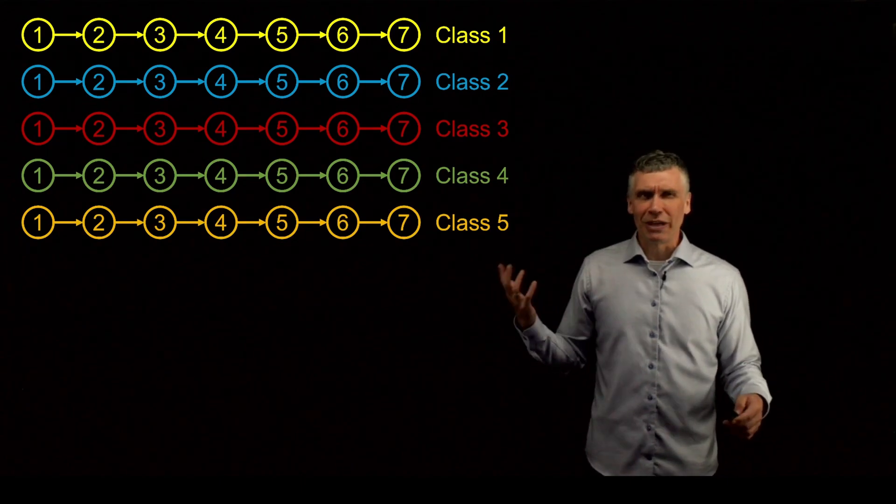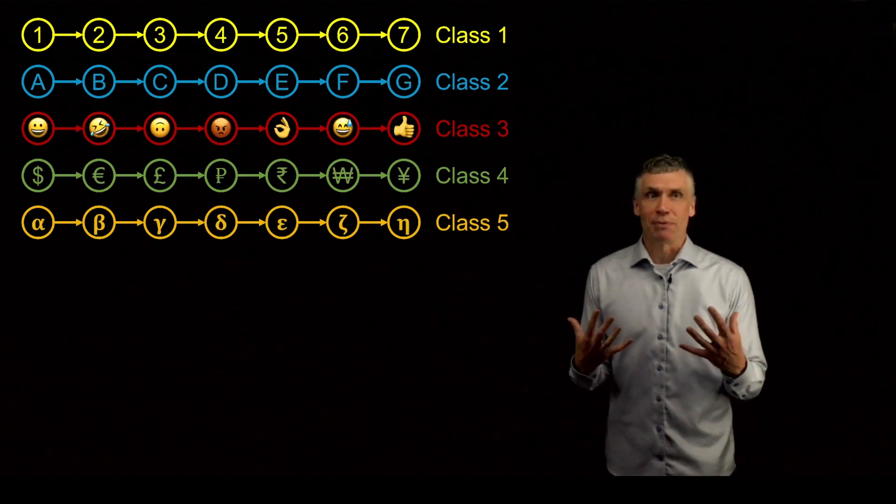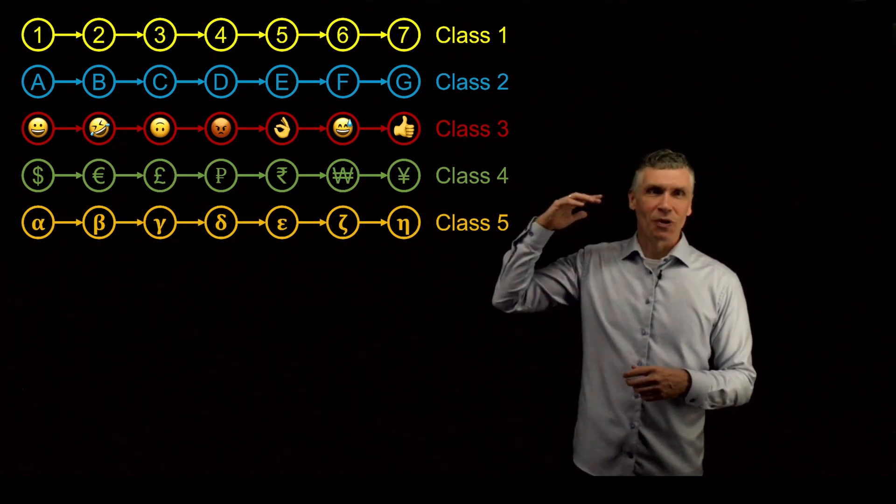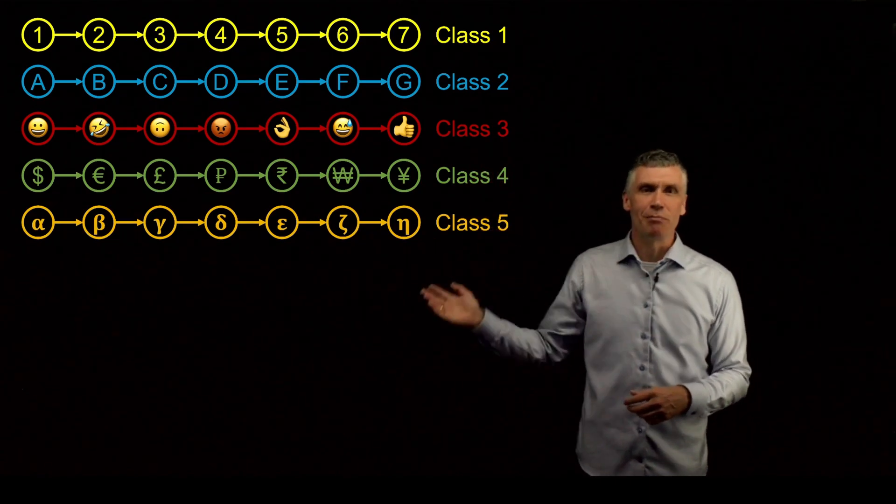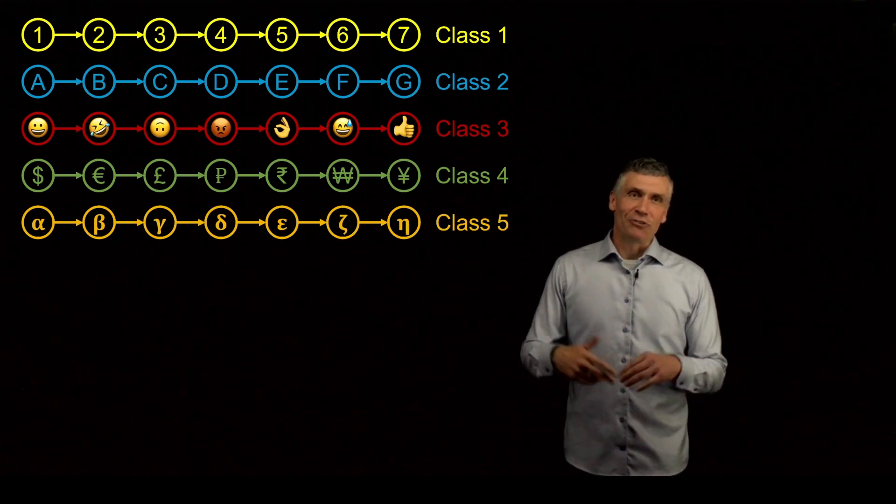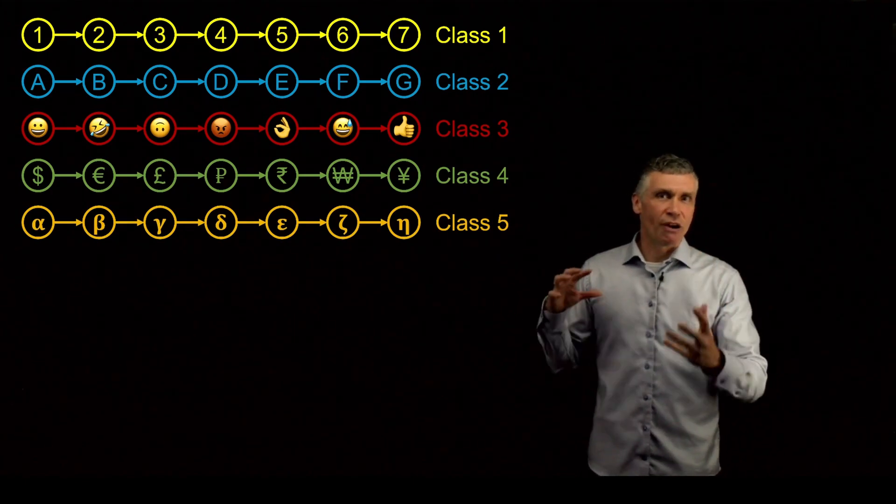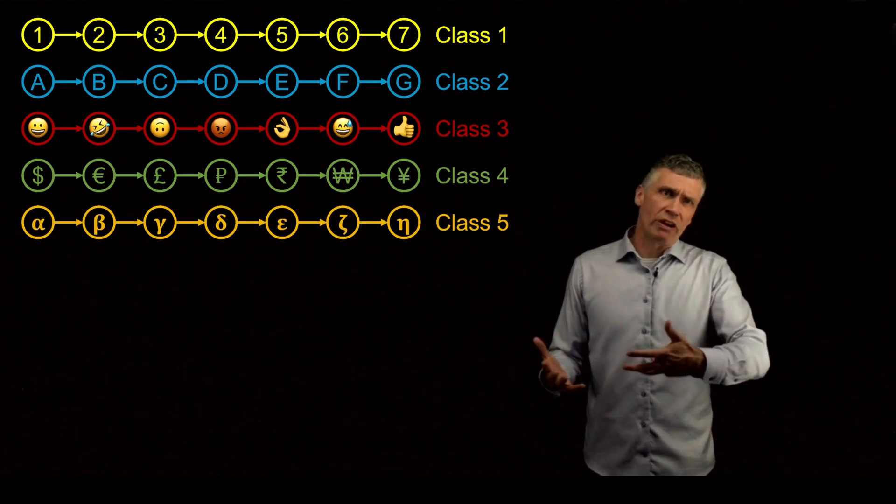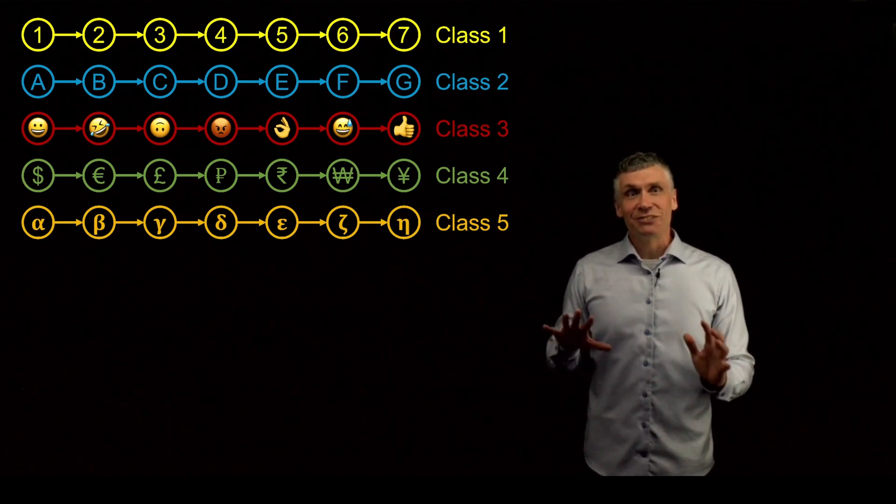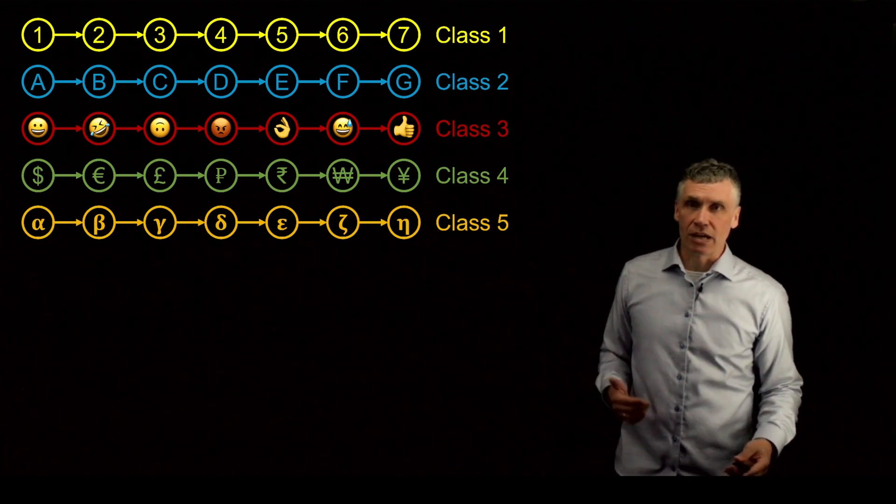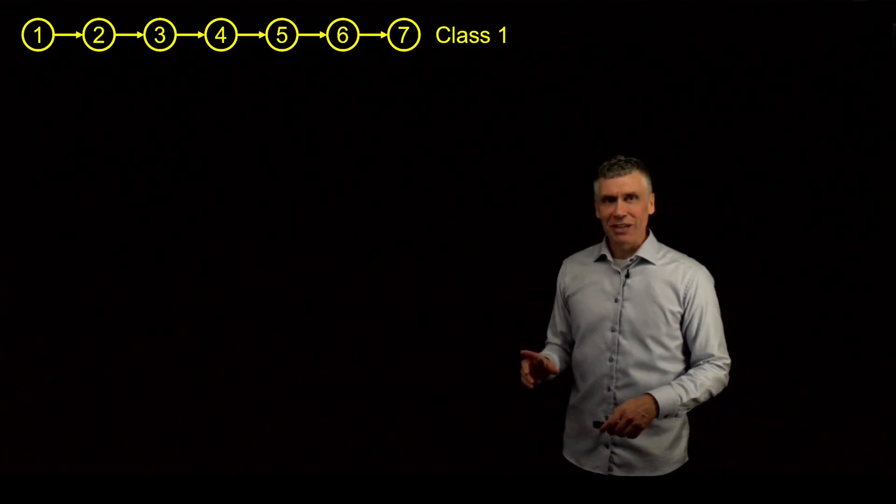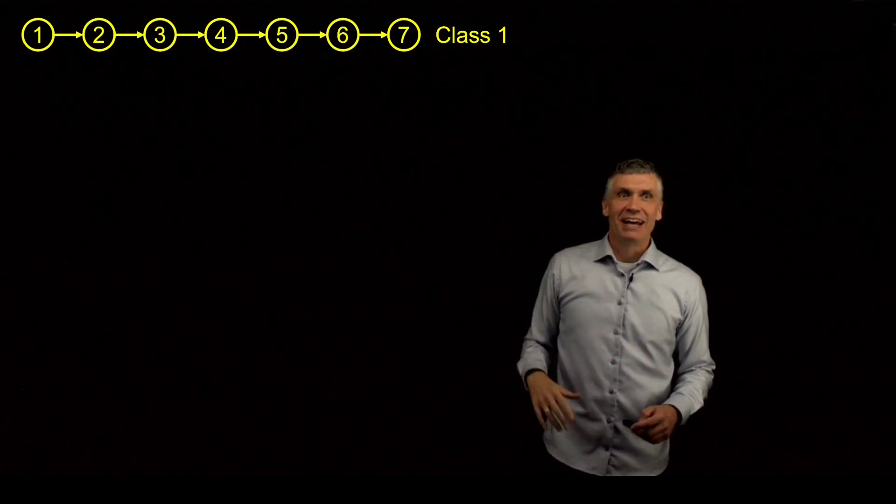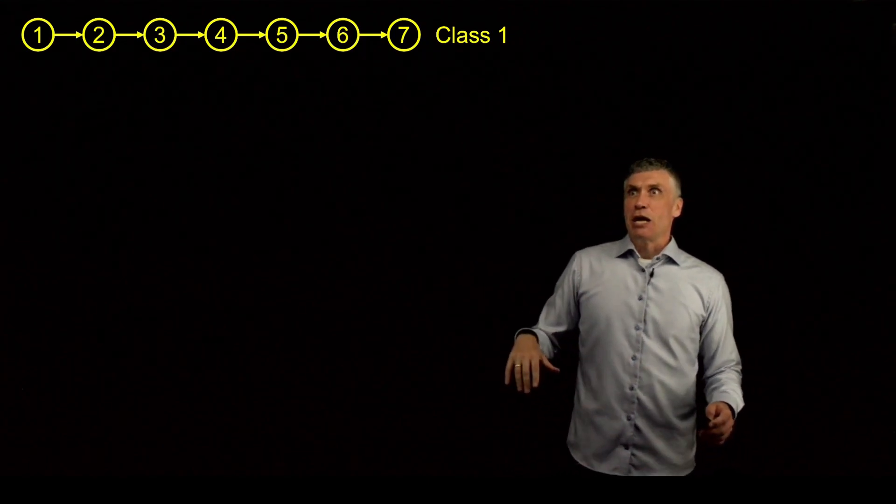If we were looking at it graphically, this would be a much more accurate representation of what the case method looks like. In class one we're going to look at numbers, class two letters, class three emojis, then currency, then Greek letters. Every class is very different from the previous class. Class two we're going to do a very technical case, class three we're going to do a very strategic case. The cases are quite different from one another and what they cover.